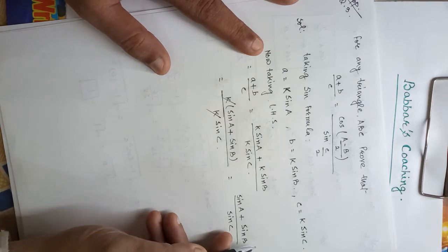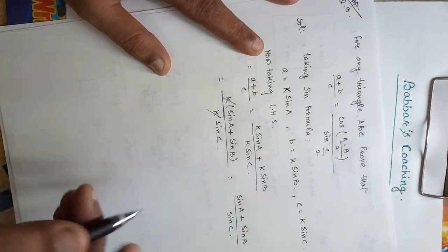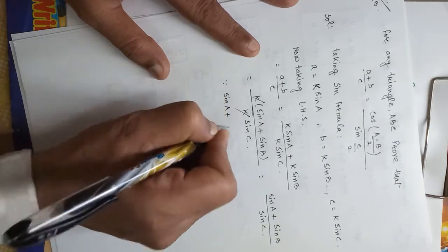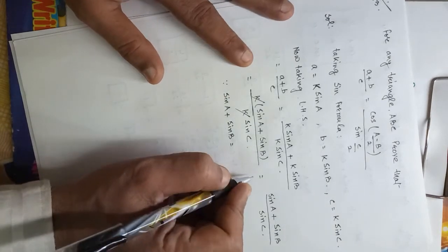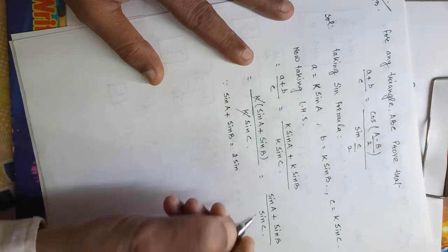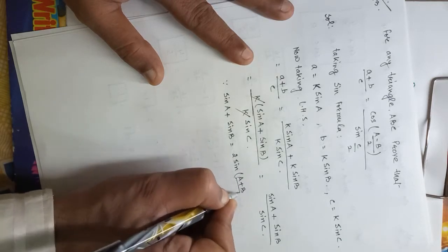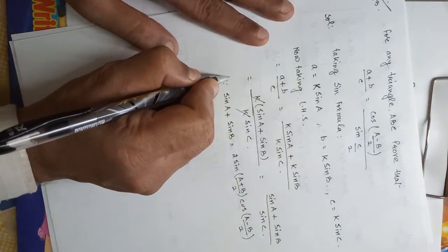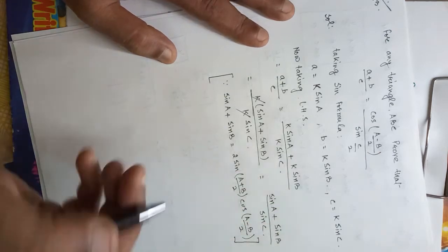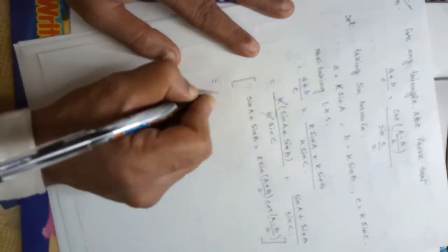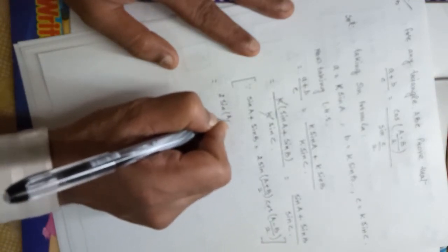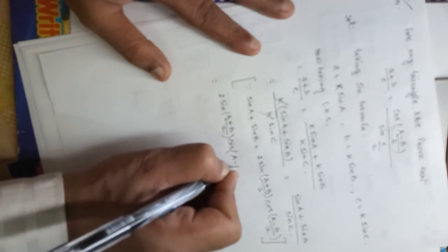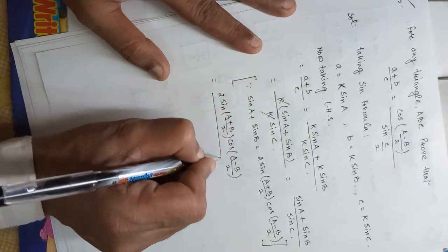Now we use the identity: sin A plus sin B is equal to 2 sin((A plus B) upon 2) cos((A minus B) upon 2). So we write this formula here: 2 sin((A plus B) upon 2) times cos((A minus B) upon 2), all upon sin C.